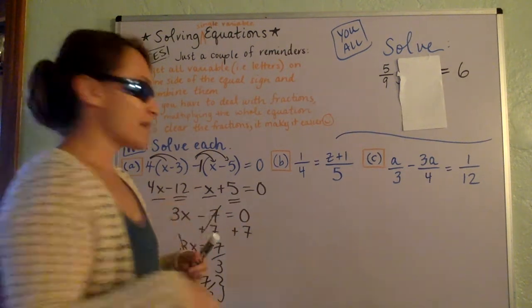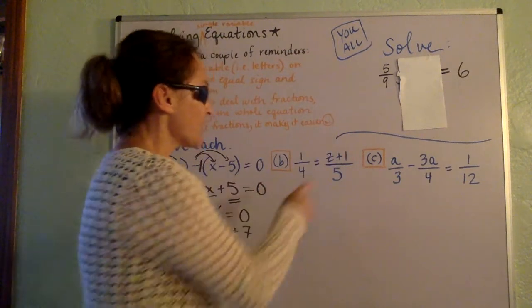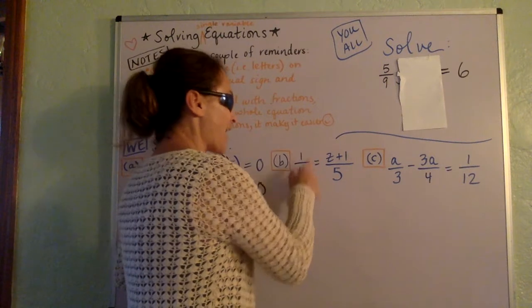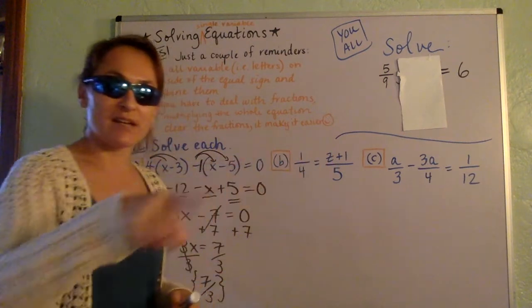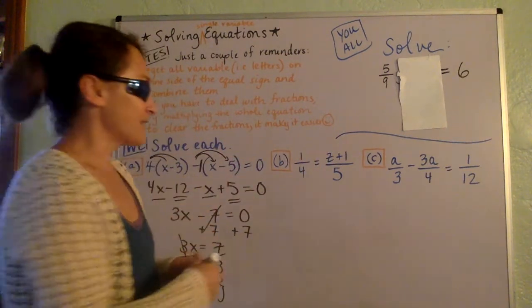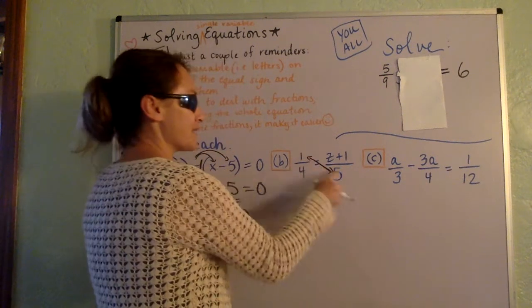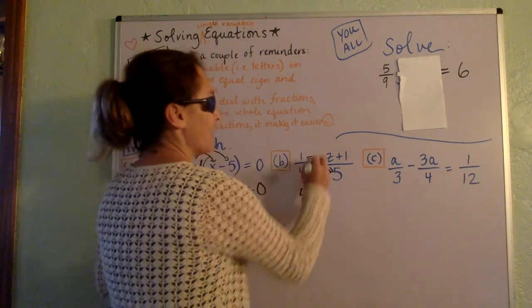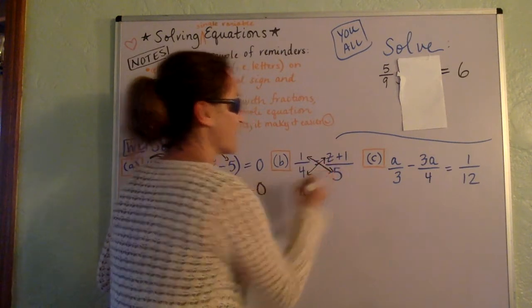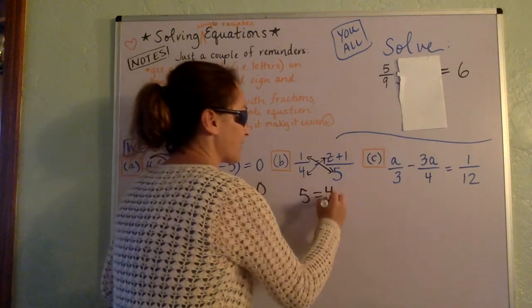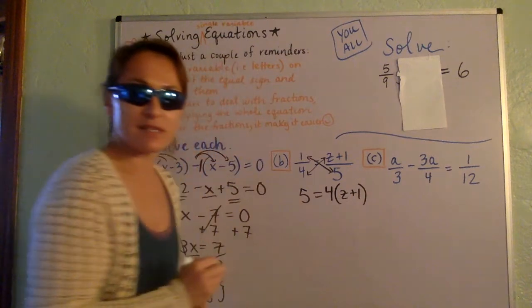Now, on a problem like this, this is a proportion. We're going to talk a lot about proportions in semester two. But whenever you just have a fraction equals another fraction, just like this, one fraction on this side, one fraction on this side, you can always cross multiply and solve. So cross multiply. This times this. So 5 times 1 is 5. Then drop the equal sign. And then crisscross the other way. So when you crisscross the other way, that's a 4 times a binomial. So keep the binomial in parentheses.